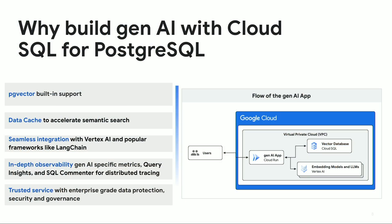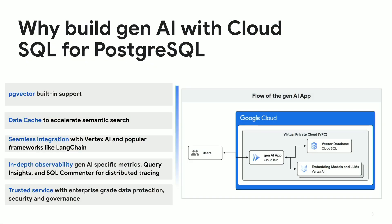Once you build a Generative AI application, you want to have observability into its performance. Cloud SQL provides end-to-end observability with Generative AI-specific metrics, tracing, and query insights. Most importantly, Cloud SQL for PostgreSQL is an enterprise-ready database with the best data protection, security, and governance capabilities. When you use the same database as your vector database, you get all these benefits automatically — unlike a specialized vector database, where you have to re-architect and rethink all these workflows.